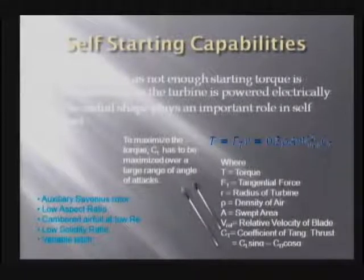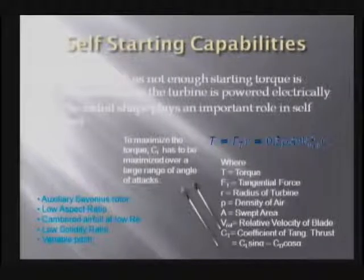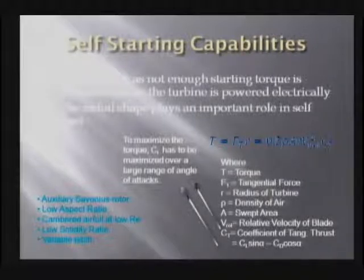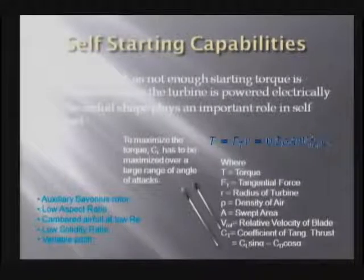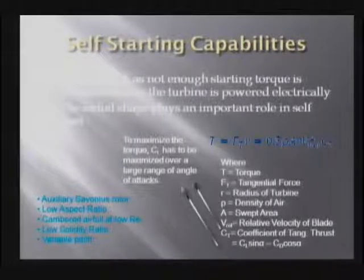Another approach that could be used is the auxiliary Savonius rotor. The Savonius rotor is a drag-driven wind turbine which can help start the vertical axis wind turbine, but later on it produces drag rather than helping the vertical axis wind turbine. So the main things to look at are the low aspect ratio, the cambered airfoil, the low solidity ratio, and these days a lot of research is being done in variable pitch. It's a rather complex design using a lot of control systems — it just changes the pitch according to the wind direction of the blades in the wind turbine.